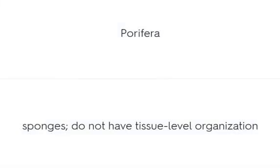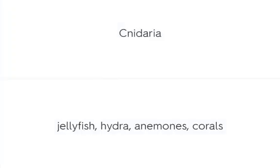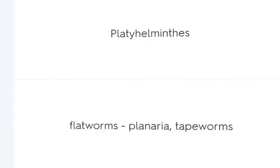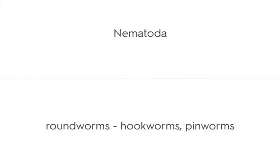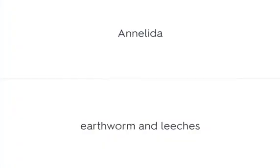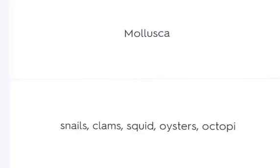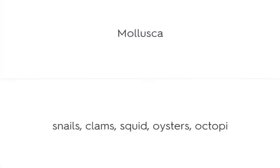Porifera (sponges) do not have tissue-level organization. Cnidaria includes jellyfish, hydra, anemones, and corals. Platyhelminthes includes flatworms, planaria, and tapeworms. Nematoda includes roundworms, hookworms, and pinworms. Annelida includes earthworms and leeches. Mollusca includes snails, clams, squid, oysters, and octopi.